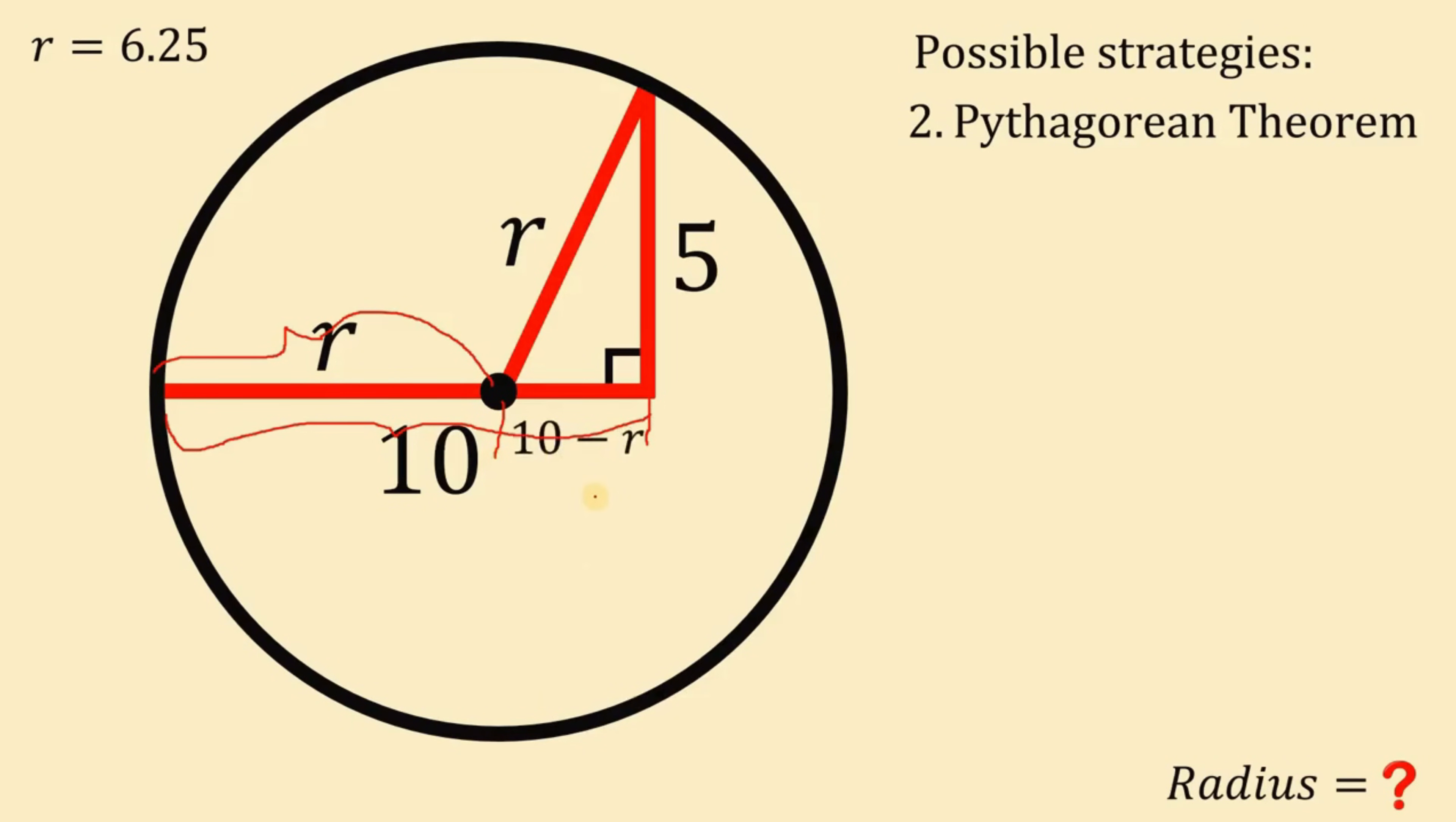Now, at this point, let's focus on the right triangle, having a measure of R, 5, and 10 minus R. We can now use the Pythagorean theorem because this is a right triangle. So we have the hypotenuse R and the two legs measures 5 and 10 minus R. So if we use the Pythagorean theorem, we have now 10 minus R quantity squared plus 5 squared equals R squared.